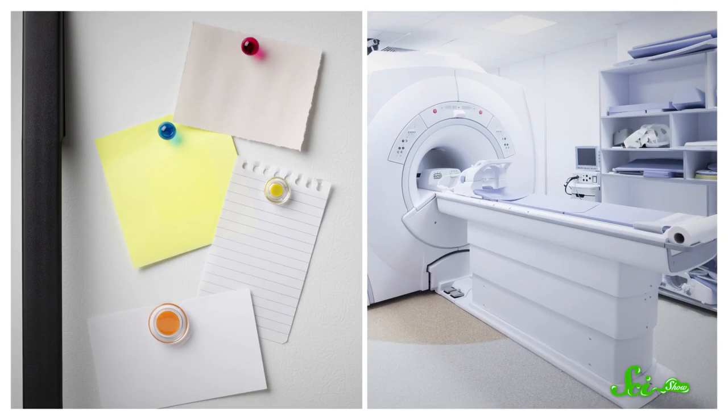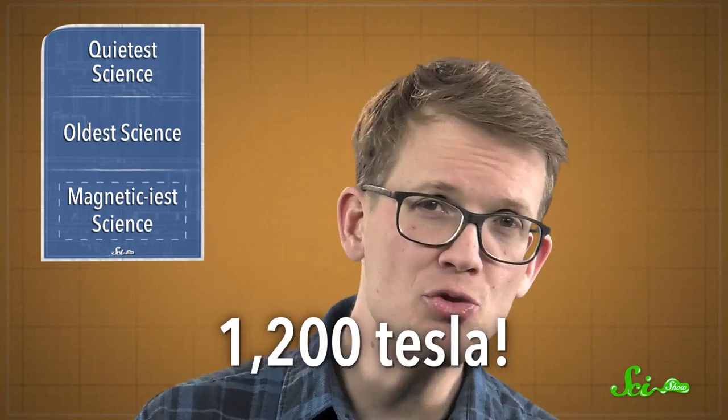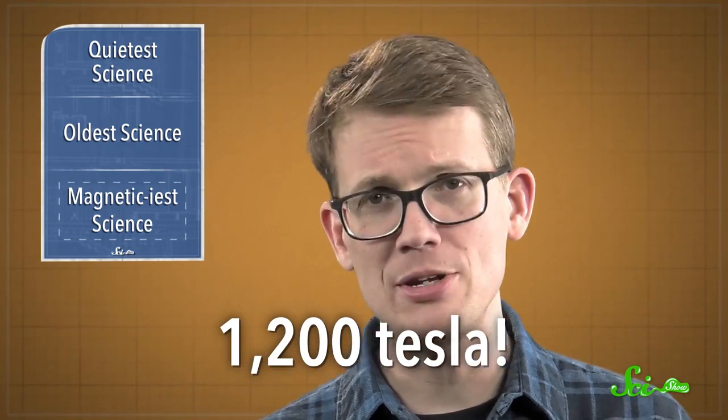Magnetic field strength is measured in units of Tesla. Common fridge magnets might be about a hundredth of a Tesla, while the field in an MRI can reach about three Tesla. But that is nothing compared to the twelve-hundred Tesla produced in that lab in Tokyo.